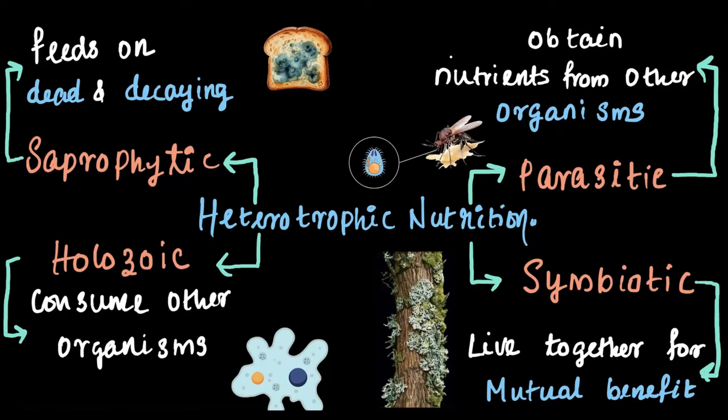Now, when you go out, why not observe this in your environment? Look for fungi on fallen tree parts, observe lichens on trees on the way back home from school, and you may also find algae-lichen symbiotic relationships on rocks. Understand their nutritional strategies to survive.